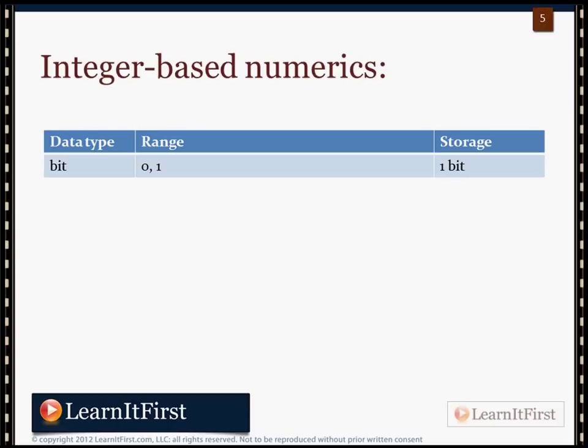Let's walk through the integer-based numerics — integer meaning there is no decimal place. In SQL Server we have the bit data type, and the bit data type has only two states, two values: it is 0 or 1. This is what we use for Boolean values — true, false, yes, no. Is enabled, is not enabled — it's perfect for the bit data type.